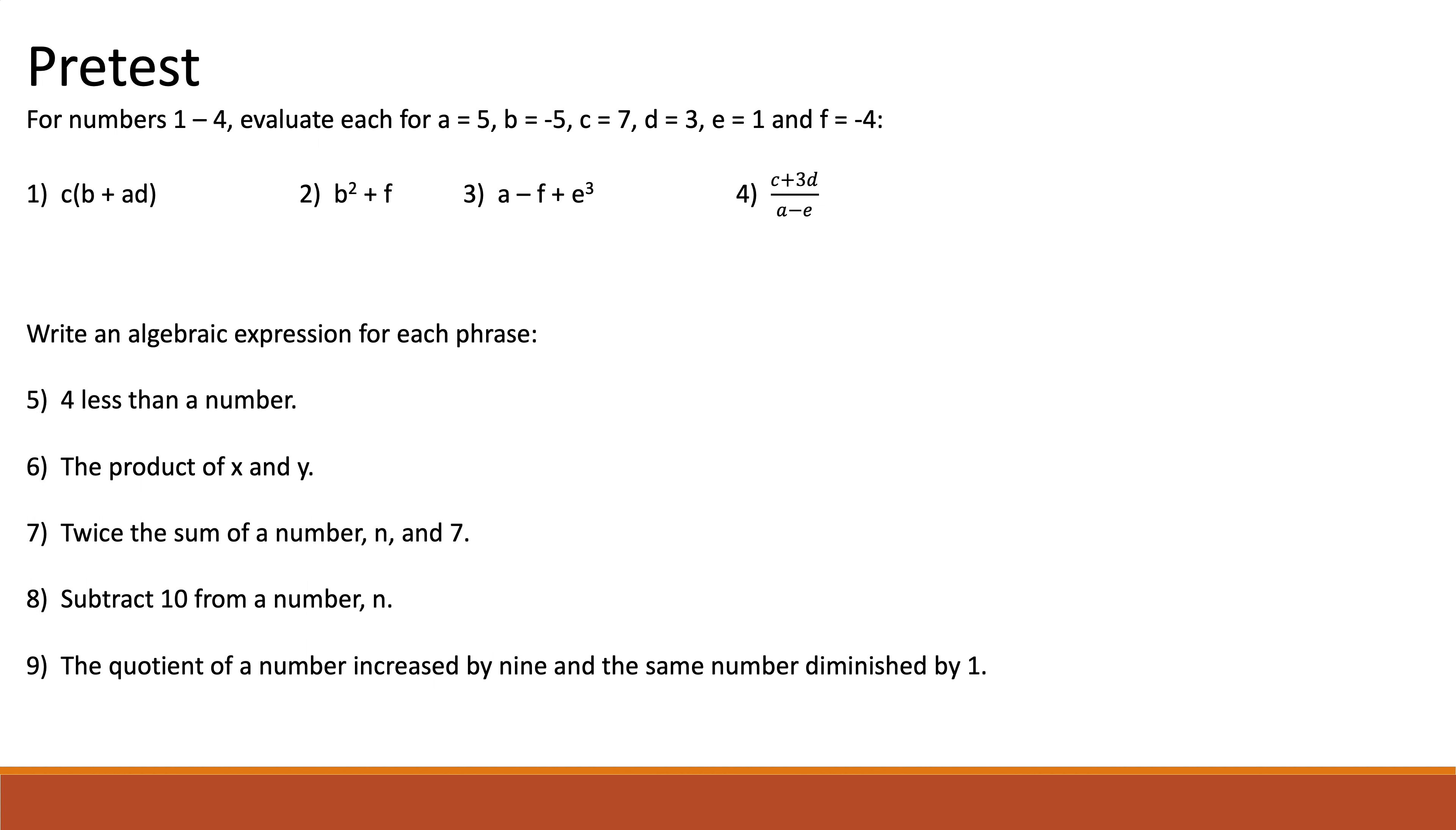You're going to work on this pretest. Here's the deal with the pretest: there's like 31 or maybe 32 questions, I think 31, and of these, 20 of them will find their way onto the test. The way I normally do it, so I normally change the number of values. Like for example, it says for numbers 1 through 4, evaluate each if a is 5, b is negative 5, c is 7, blah blah blah.